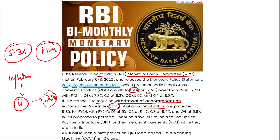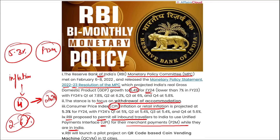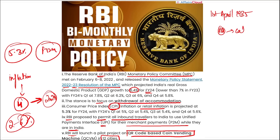Remember, the basic norm for inflation is between 2% to 6%, and RBI is planning to reduce it to 4% by 2024. Apart from this, RBI proposed to permit all inbound travelers to India to use UPI for merchant payments while in India. RBI will also launch a pilot project — a QR code-based coin vending machine in 12 cities. RBI was established on 1st April 1935, initially headquartered in Calcutta, and later moved to Mumbai in 1937.